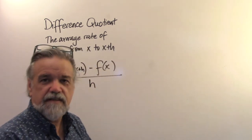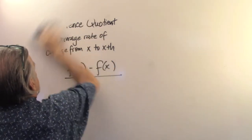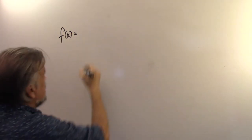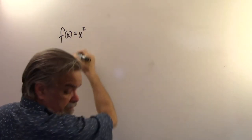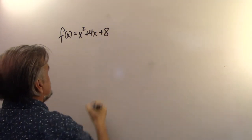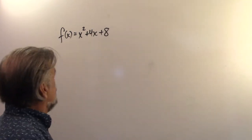Let's take a, things always get clearer after an example. So, let's look at an example. Let's look at the example f of x equals x squared plus 4x plus 8. And I want to find the difference quotient of this function.